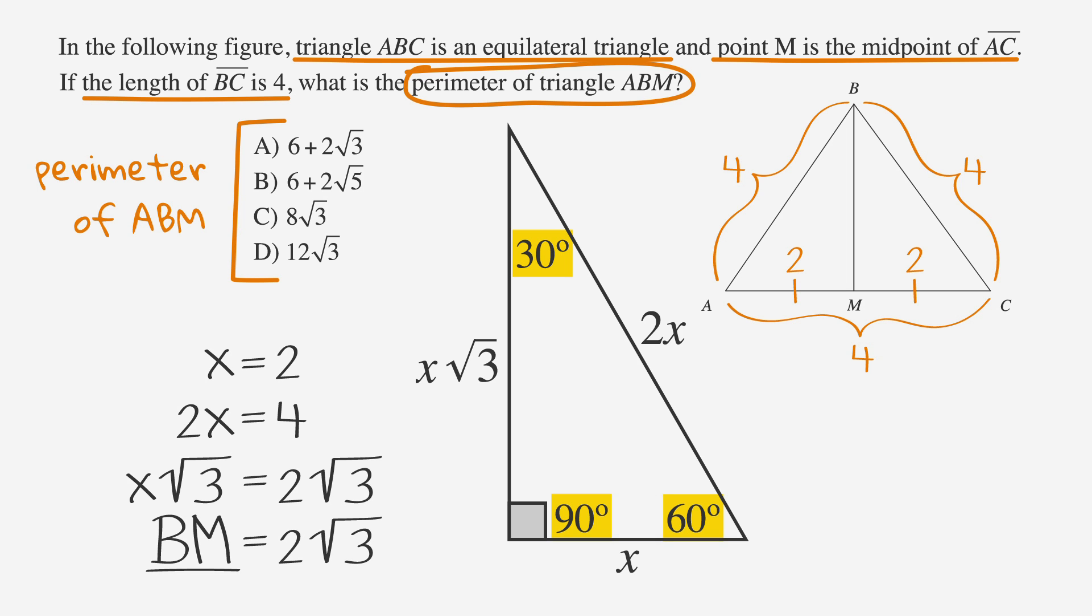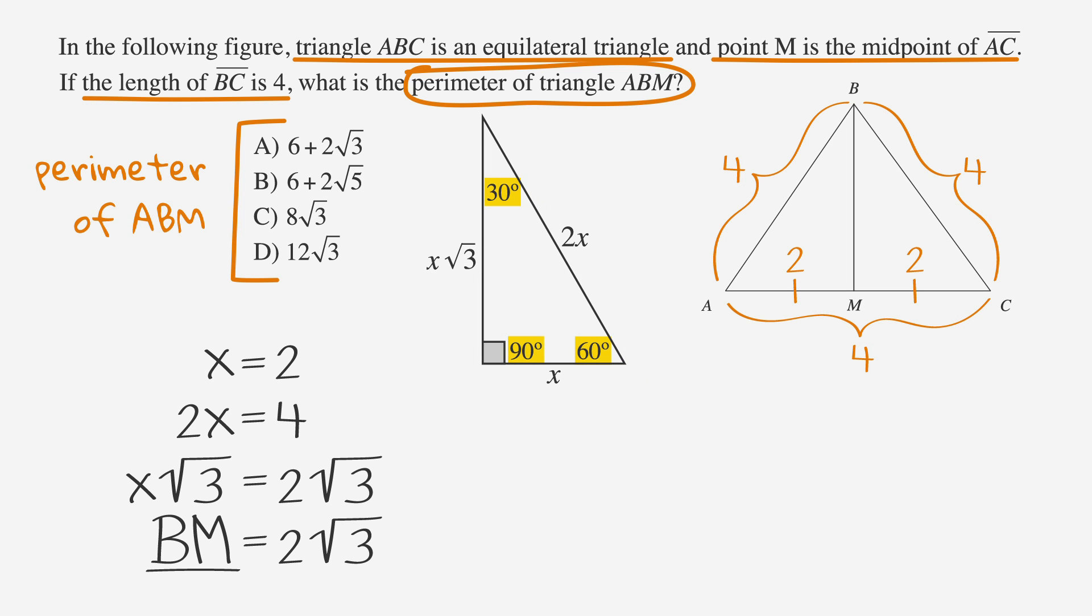To find the perimeter of the triangle ABM, all we need to do is add the sides. When we do, we get 4 plus 2 plus 2 root 3, or 6 plus 2 times the square root of 3. Answer choice A it is.